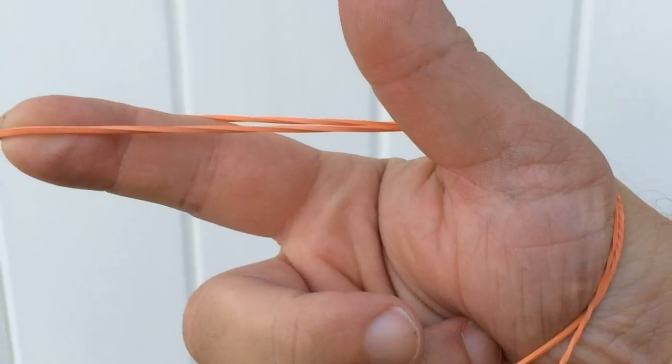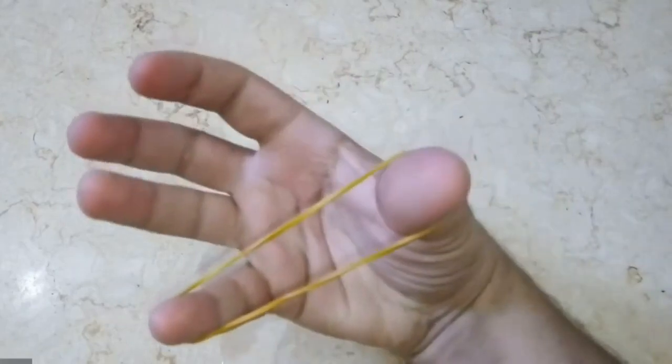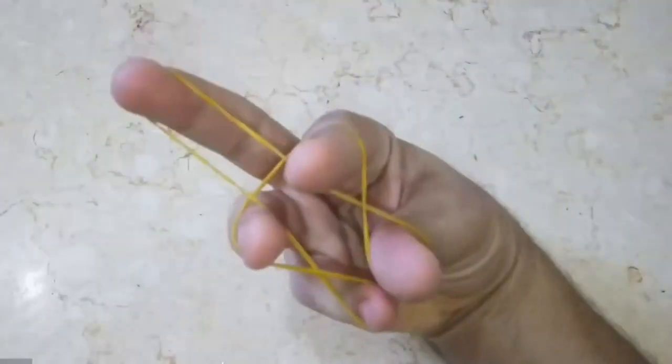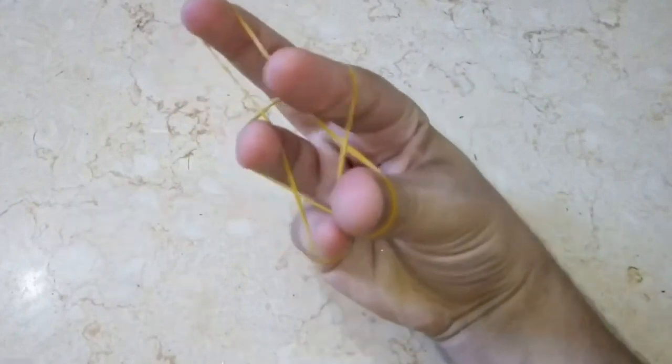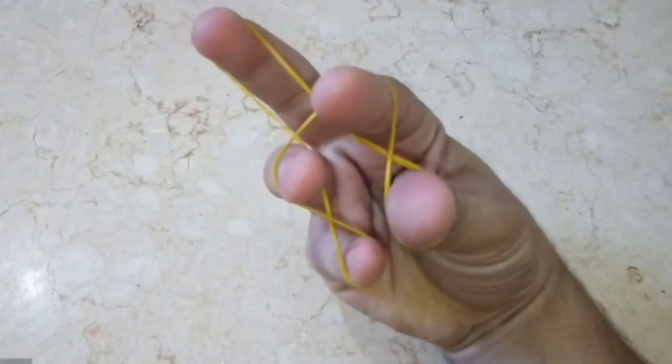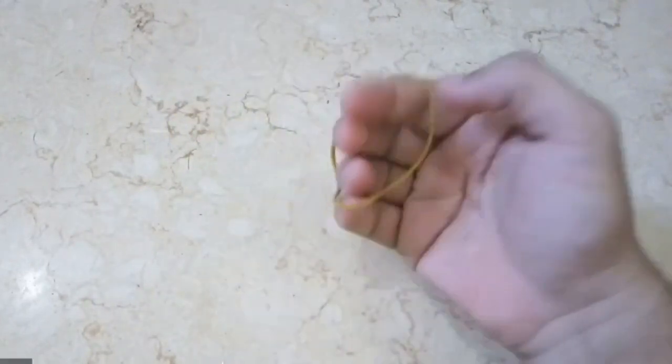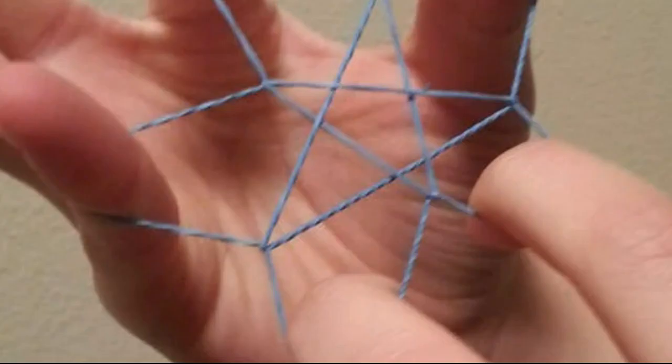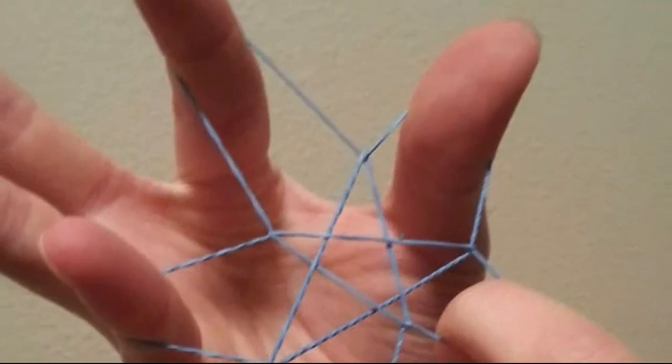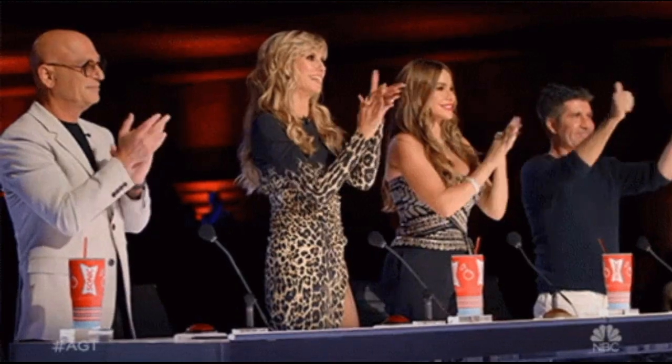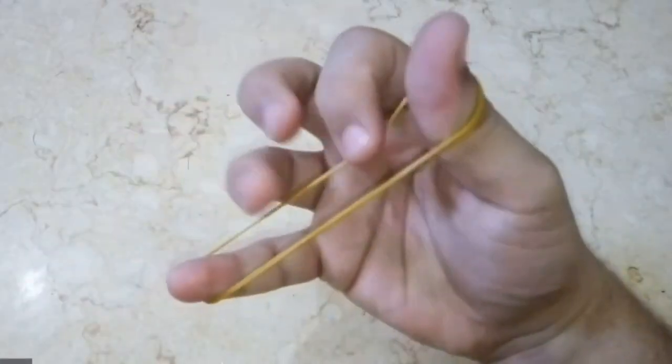In this magic trick, the magician utilizes a rubber band to create a captivating illusion. They start by placing the rubber band around their thumb and index finger, forming a loop. With a swift motion or a subtle flick, the magician magically transfers the rubber band from their thumb to their index finger. This sudden transfer seemingly defies the laws of physics, leaving the audience amazed and wondering how it was done.